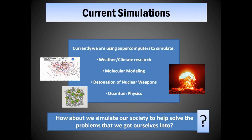Currently we are using the world's fastest supercomputers to do things like weather simulations and simulations of nuclear detonations, but wouldn't it be more wise to simulate the spectrum of social phenomena instead, to help solve the problems that we got ourselves into?